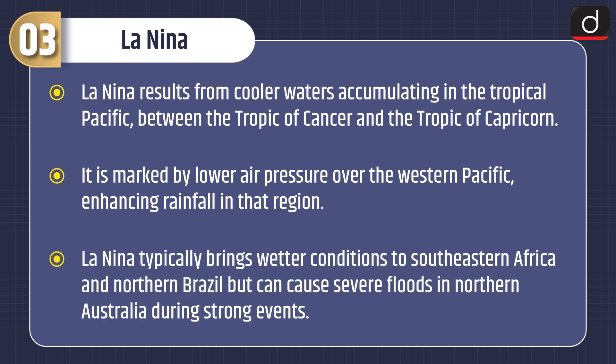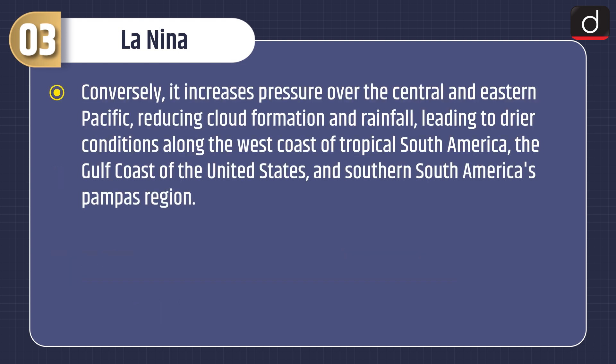La Niña typically brings wetter conditions to southeastern Africa and northern Brazil, and can cause severe floods in northern Australia during strong events. Conversely, it increases pressure over the central and eastern Pacific, reducing cloud formation and rainfall, leading to drier conditions along the west coast of tropical South America, the Gulf Coast of the United States, and southern South America's Pampas region.